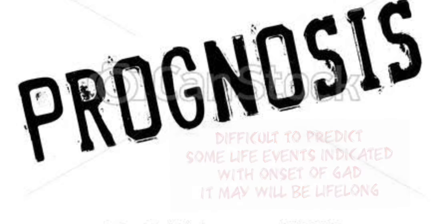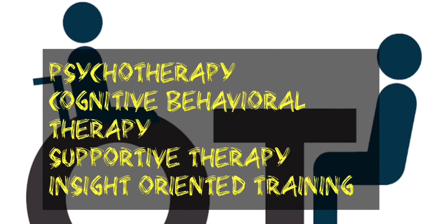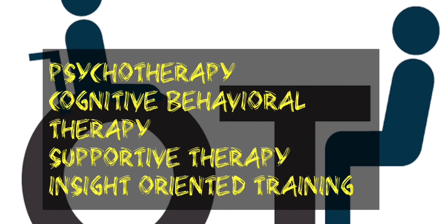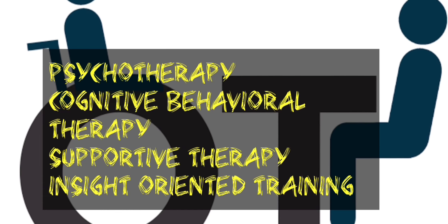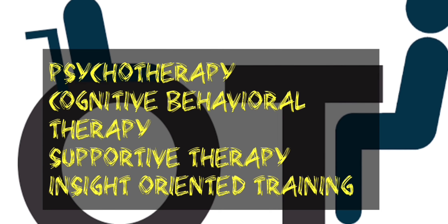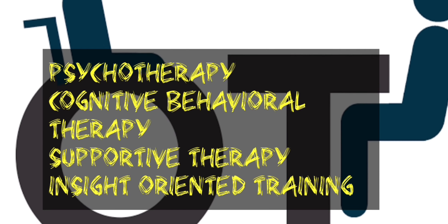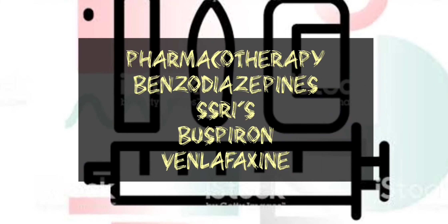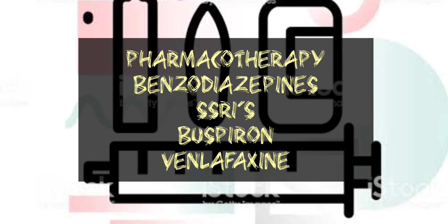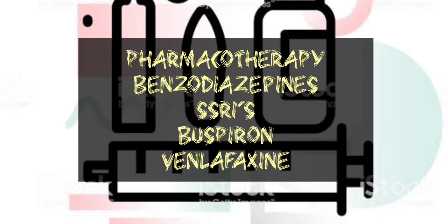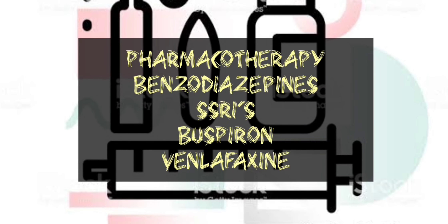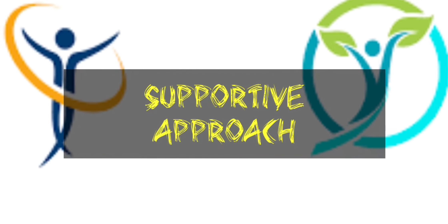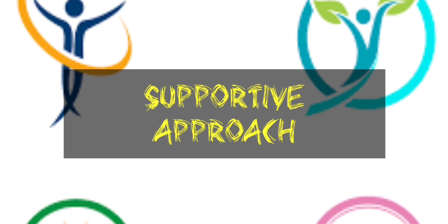Treatment options under three headings: first, psychotherapeutic approaches — includes cognitive behavioral therapy, mainly relaxation and biofeedback, and also insight-oriented training. Second, pharmacotherapeutic approaches — includes benzodiazepines, SSRIs, buspirone, and venlafaxine. Third, supportive approaches — includes supportive therapy. Thank you.